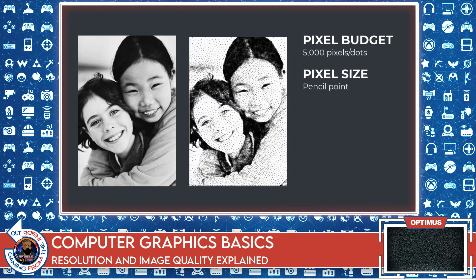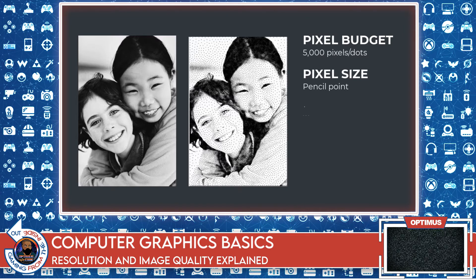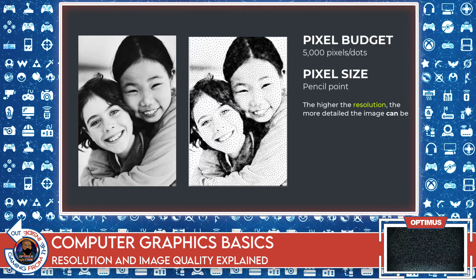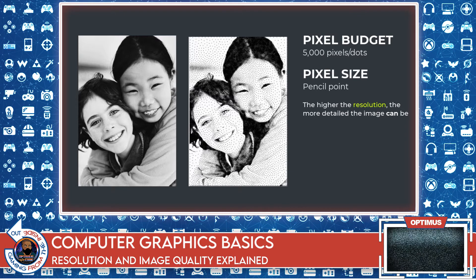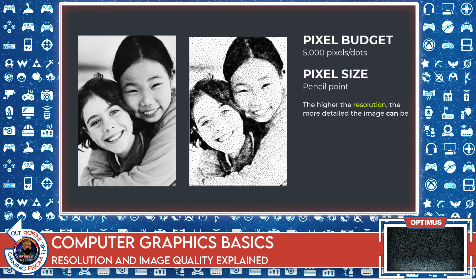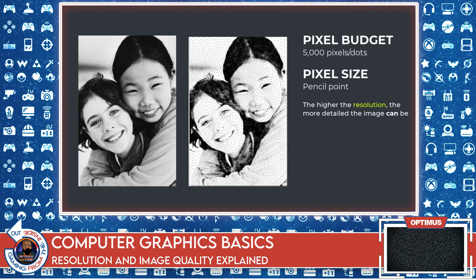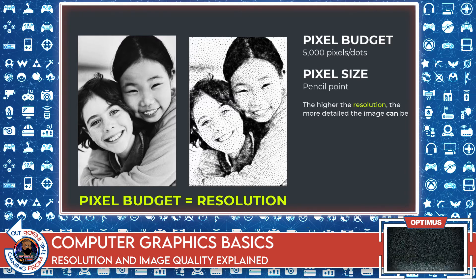One thing we can infer right away is that the more dots you have to work with, the more detailed you can make your rendition. More dots, or more pixels, makes it possible for you to create a clearer and cleaner image. It doesn't guarantee that you will, but it certainly makes it possible. The more pixels, the better the image — that number of pixels is what we call resolution.